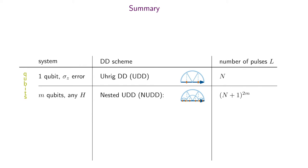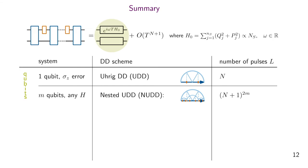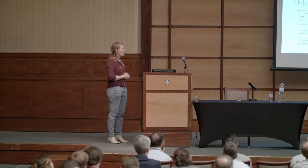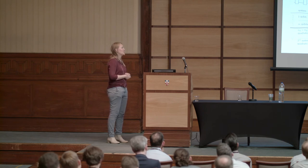To summarize: we first looked at higher-order qubit schemes — the URIC dynamical decoupling scheme and the nested URIC dynamical decoupling scheme — which achieve a given decoupling order using a linear or polynomial number of pulses. Then we looked at how to extend the notion of dynamical decoupling to continuous variable systems, where the system evolution is not made trivial but reduced to a homogenized version. We then presented our newly introduced bosonic sequences: one for decoupling built on URIC dynamical decoupling, and one for homogenization using the nested URIC dynamical decoupling schemes. The pulses are quite simple — phase flips and swaps — but under decoherence we are still restricted to quadratic Hamiltonians.